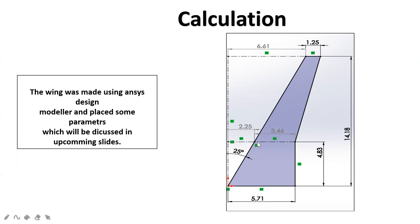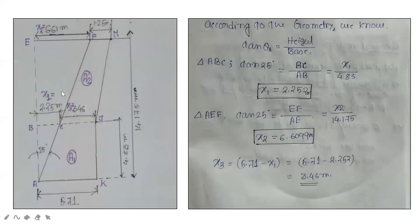These unknown distances are named x1, x2, and x3. For easy calculation, we labeled the total wing points as A, B, C, E, F, M, J, and K, and divided the wing into two trapezoids. This division helps us calculate the area easily.